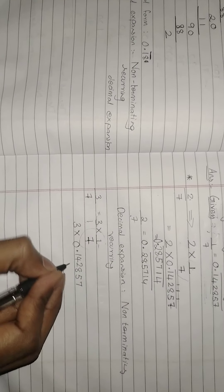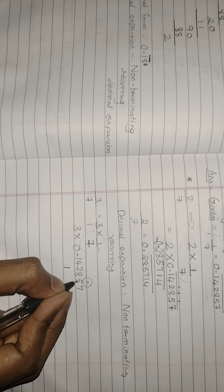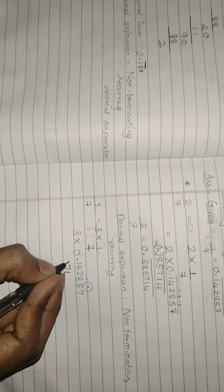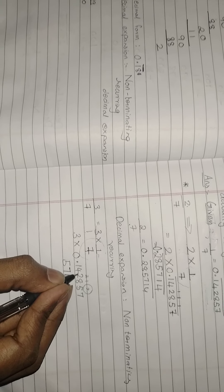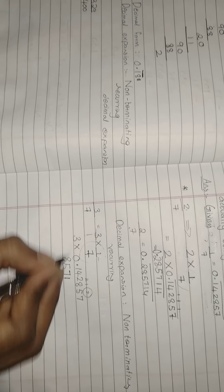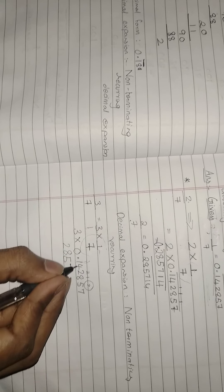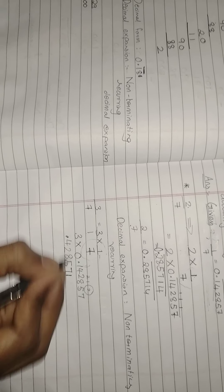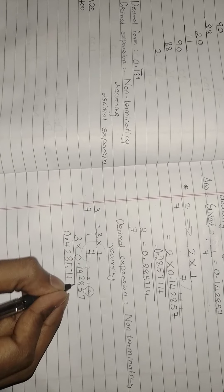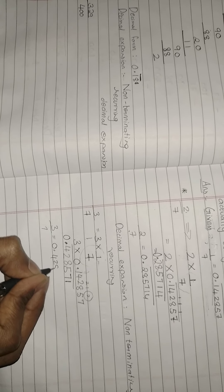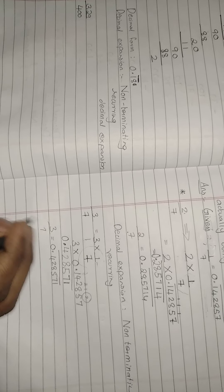3 sevens are 21, carry 2. 3 fives are 15, plus 2, 17. 3 eights are 24, plus 1, 25. 3 twos are 6, plus 2, 8. 3 fours are 12, carry 1. 3 ones are 3, 4, point we have. 3 zeros are 0, bar. So we got 3 by 7 as 0.428571 bar.